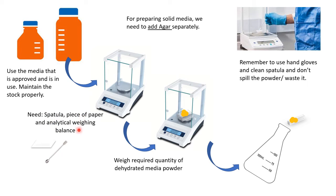After taking the approved bottle, you will need a spatula, a piece of paper, and an analytical balance for weighing. Place a clean piece of paper on the balance and press the tare button to set it to zero. Then using the spatula, weigh out the required quantity of media powder — for example, if you require 3 grams for 100 ml, you need 1.5 grams for 50 ml. Weigh accordingly based on the volume of media you are preparing, then carefully fold the paper and transfer the powder into the flask.